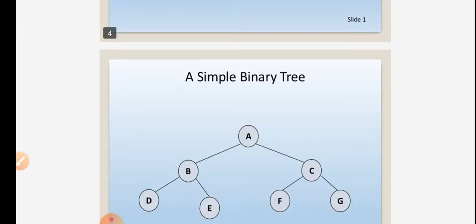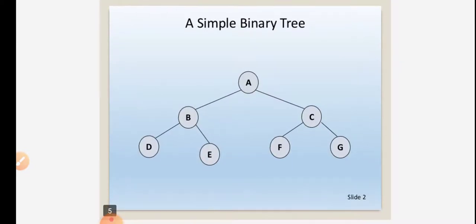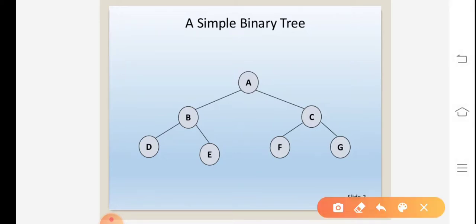A simple representation of a binary tree: node A has two children, B and C. B is represented by the left child and C is represented by the right child. Similarly, B produces two children, D and E. D is represented by the left child and E is represented by the right child.